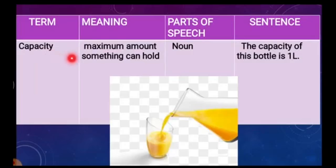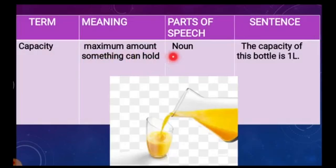The first term we have is capacity. It means the maximum amount something can hold. Capacity is a noun. Example: The capacity of this bottle is 1 litre.